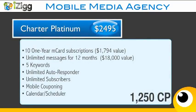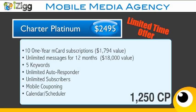The charter platinum package — again, this is a limited time offer — includes 10 one-year M-card subscriptions for an almost $1,800 value. It includes unlimited messages for unlimited texting campaigns for 12 months, which is an $18,000 value. It includes five keywords to 90210, an unlimited autoresponder, unlimited subscribers, mobile couponing, and our incredible calendar scheduler.